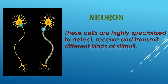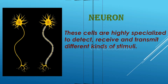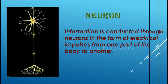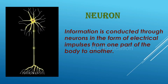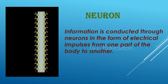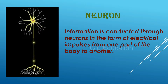These cells are highly specialized to detect, receive and transmit different kinds of stimuli. Information is conducted through neurons in the form of electrical impulses from one part of the body to another.